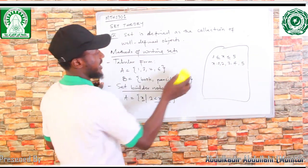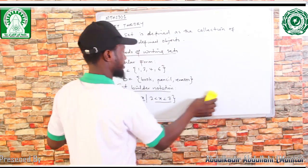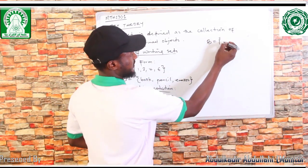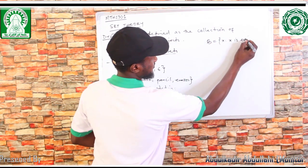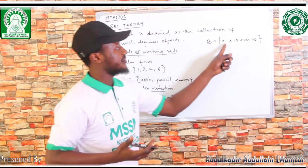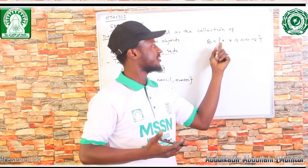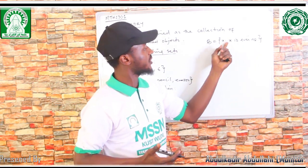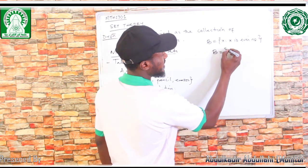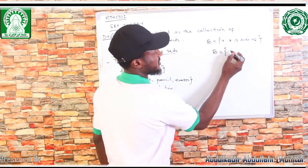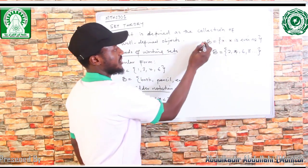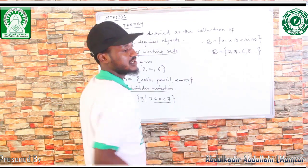For your information, for any set given in set builder notation, to perform some operation on it, you have to write it in tabular form first. For example, I may write a set B = {x : x is an even number}. It's also a set builder notation because the elements are not given — it's just a property. Since x is an even number, my set in tabular form is {2, 4, 6, 8, ...}. This is how you transform set builder notation into tabular form.